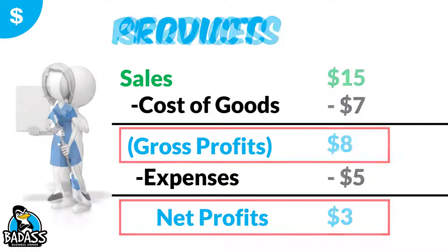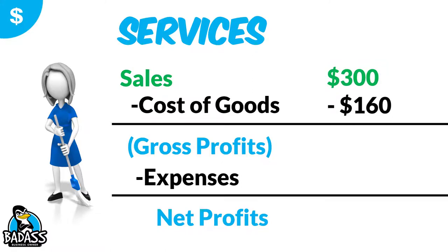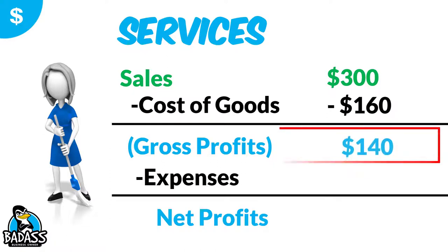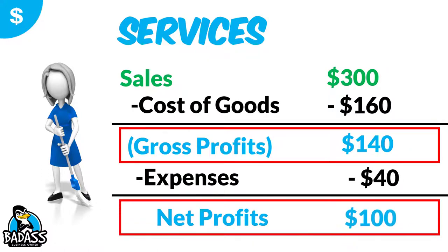When you're looking at services, you do it the exact same way. Let's say you have a cleaning company and you do a job for $300. Your cost of goods is going to be the chemicals as well as the labor for doing the service, and that's going to be $160, which tells us the gross profits on this job is $140. Then this cleaner needs to set aside $40 for her expenses, which means the net profits of this particular job is $100.